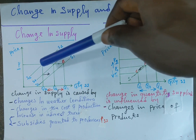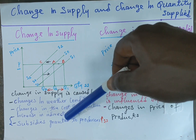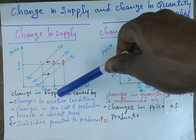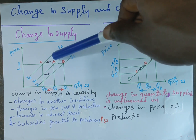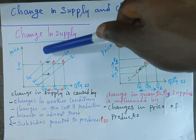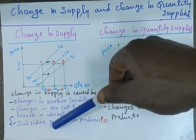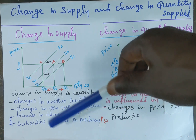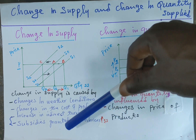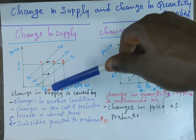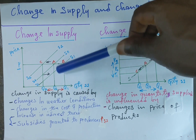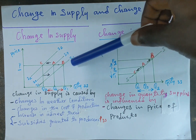This is called a decrease in supply. Let's talk of indirect taxes. Indirect taxes would increase the cost of production and reduce supply from Q0 to Q2, and this is shown on the graph where the supply curve shifts completely from SS0 to SS2 at the same price. Subsidies are financial assistance given to producers, so when the government grants subsidies to producers, they will increase their supply from Q0 to Q1, and the supply curve shifts completely from SS0 to SS1.